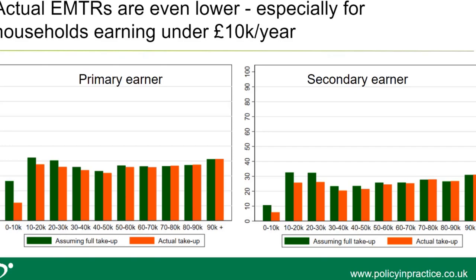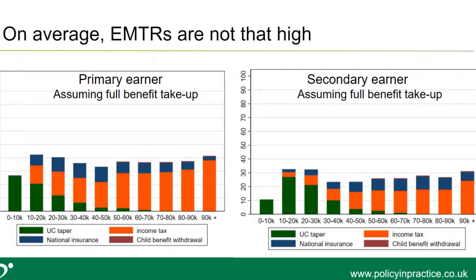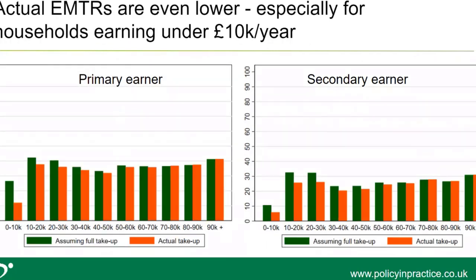These graphs compare actual EMTRs versus potential ones based on full benefit take-up. The earlier graphs assumed households have full take-up of benefits they're eligible for, whereas here I compare full take-up versus actual take-up. This shows the contribution that benefit take-up makes to EMTRs: particularly for low-income households, their EMTRs are actually lower than they should be based on the policies that apply to them, because they're not taking up benefits they're eligible for and therefore haven't got those benefits being tapered away.